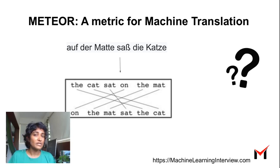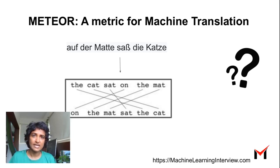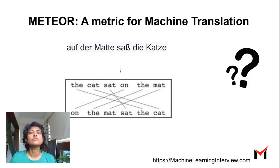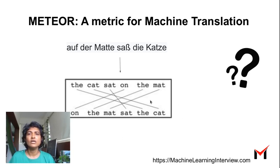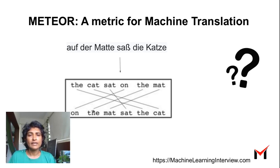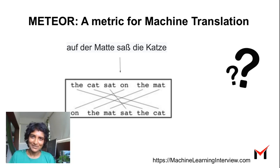To recapitulate: BLEU score is the most popular evaluation metric for machine translation, but has shortcomings — it is highly precision-based and does not account for semantic similarity. METEOR is a popular alternative that, given a candidate translation and a reference, assesses how close the candidate is to the reference by considering both precision and recall as well as semantic similarity between the two sentences.